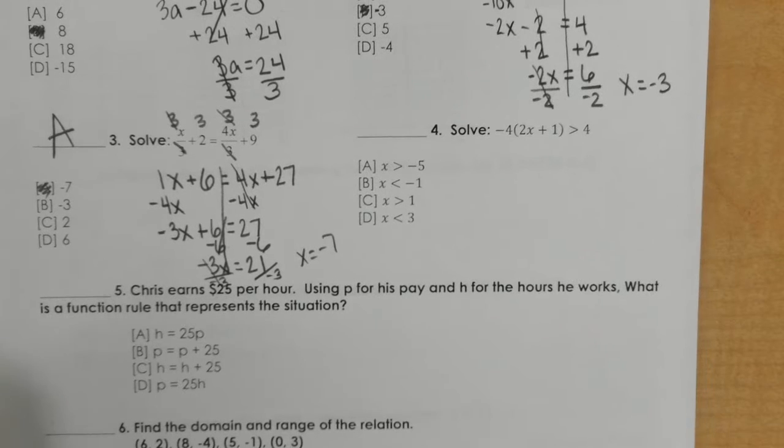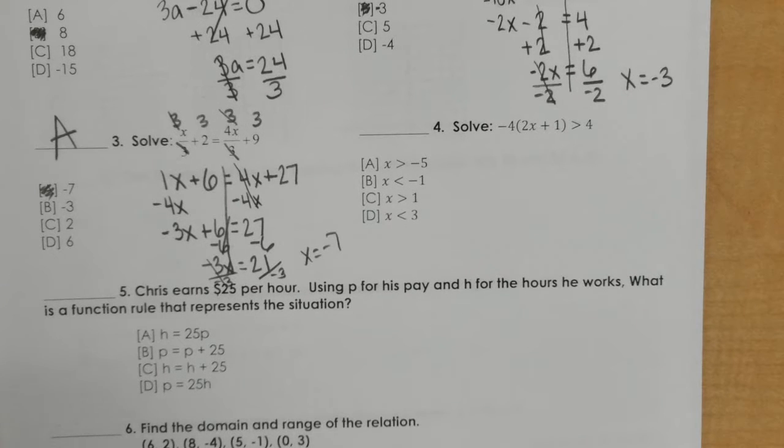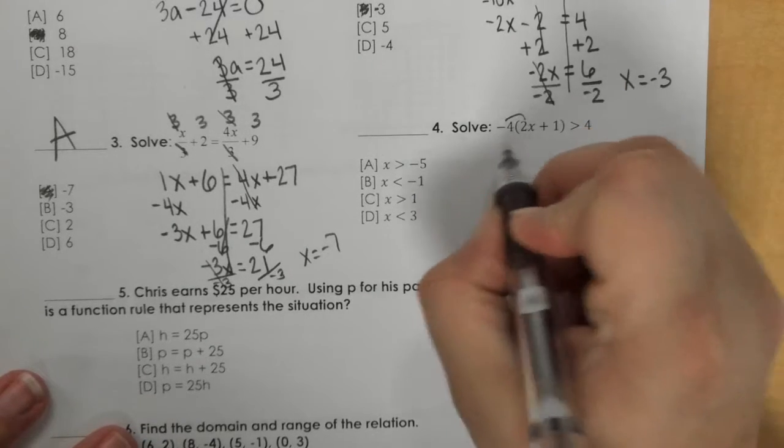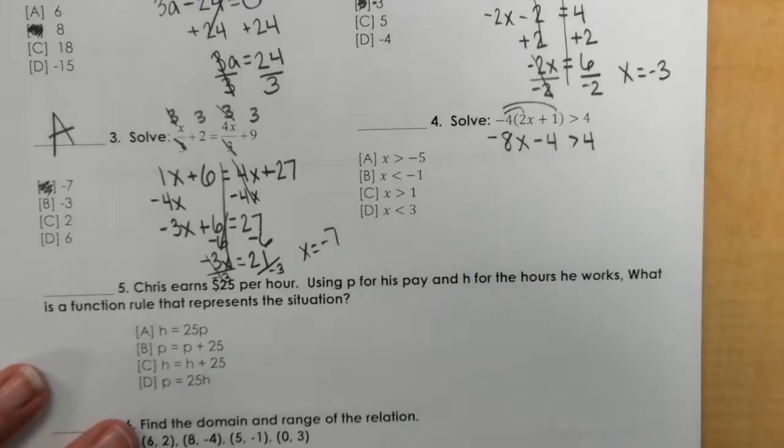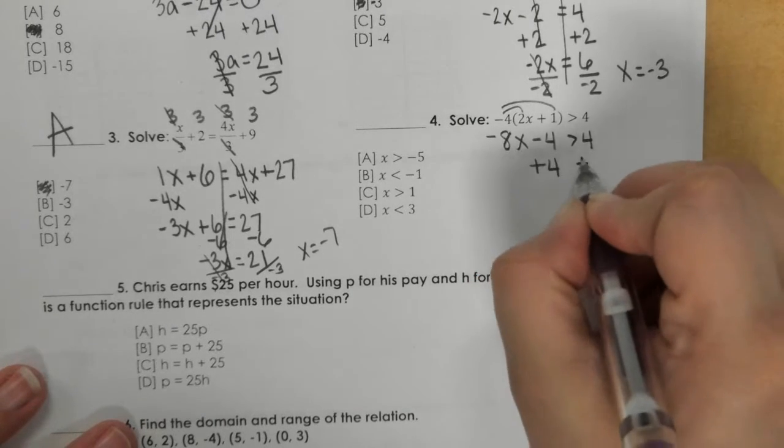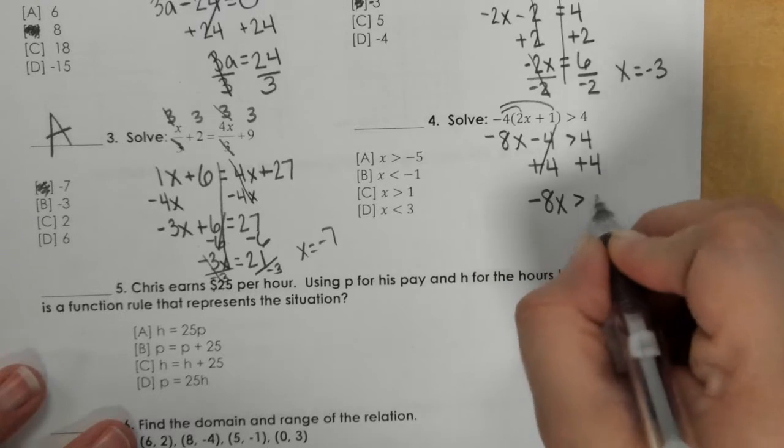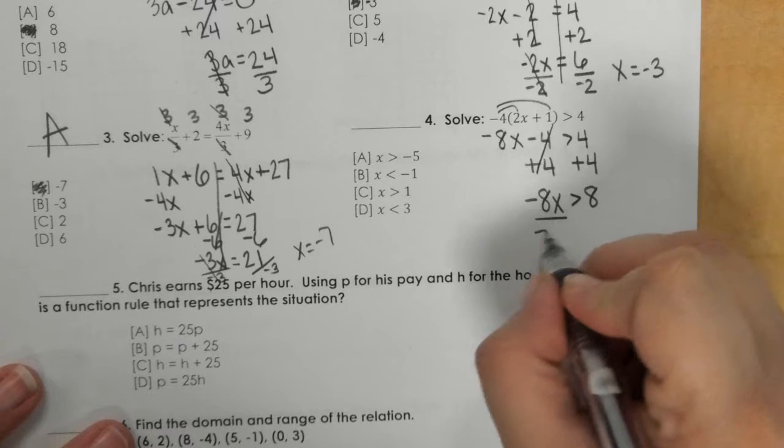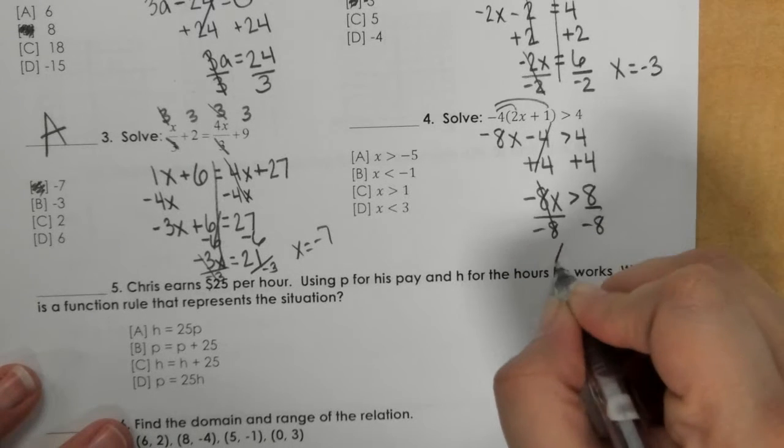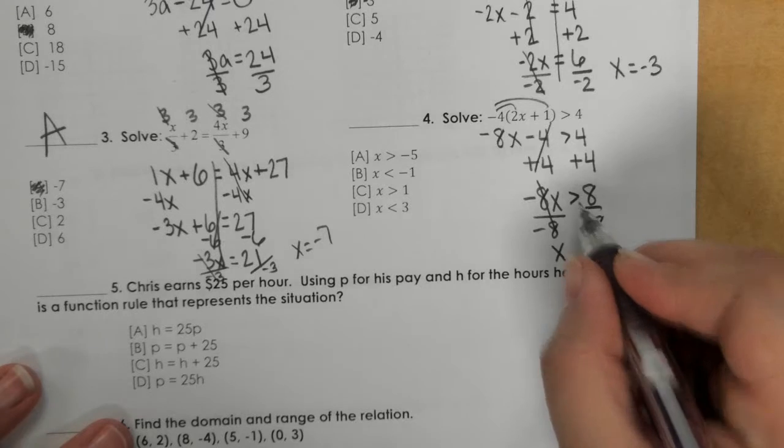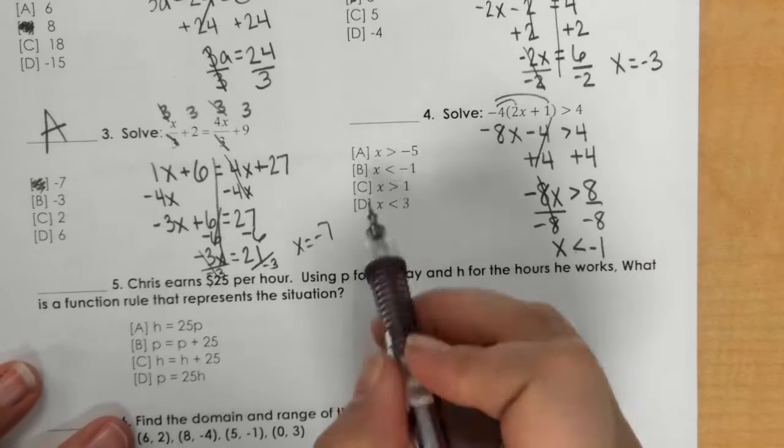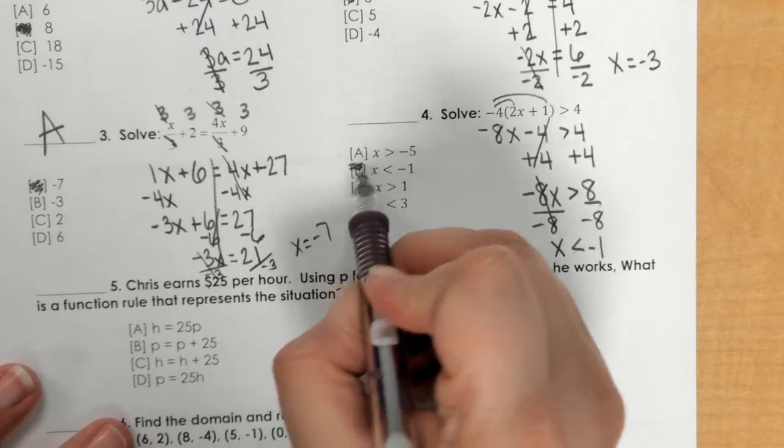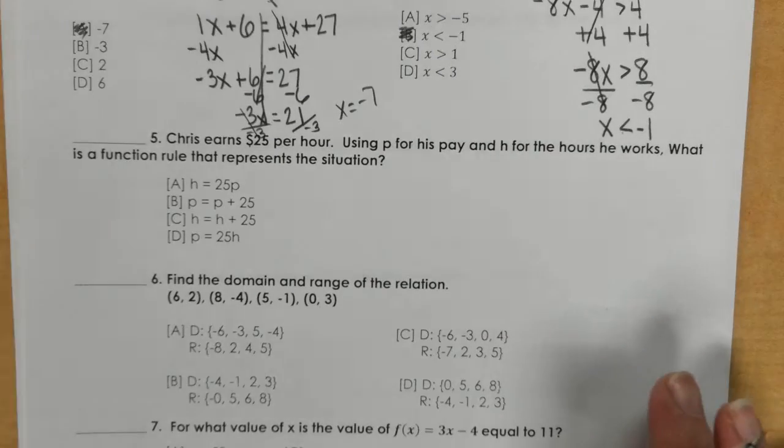In number 4 we have the distributive property, so I'm going to distribute a negative 4 and get negative 8x and negative 4. Then I solve it like a two-step, so I add 4 to both sides and get negative 8x is greater than 8. Then I divide by negative 8, and when I divide by a negative I need to flip the inequality. If I divide I get negative 1, so I'm looking for less than negative 1.